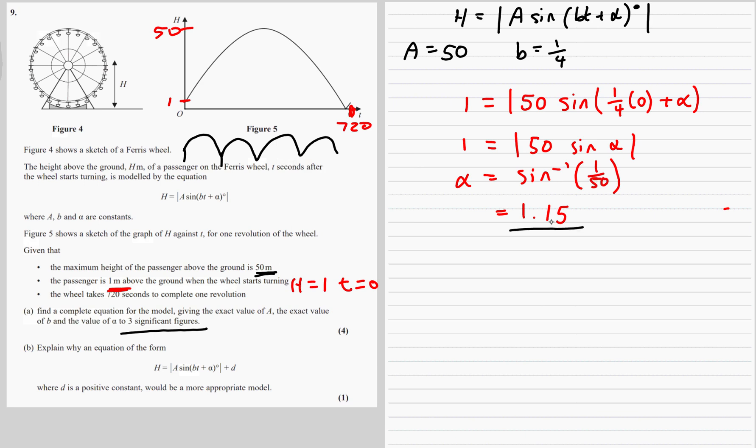So our model, we've got all the bits now, so we can just write it all together. So h equals mod 50 sine one quarter t plus 1.15.